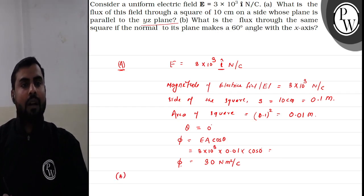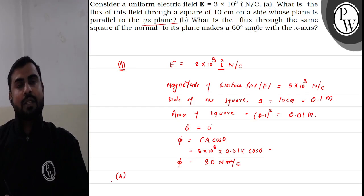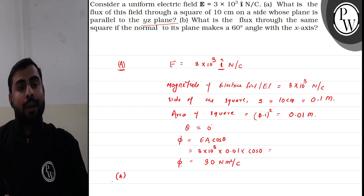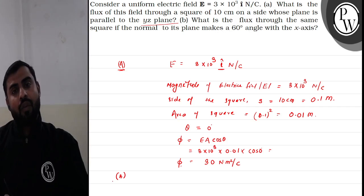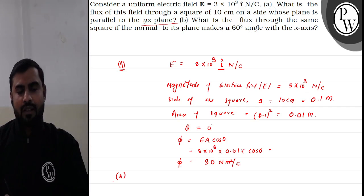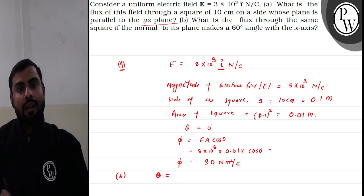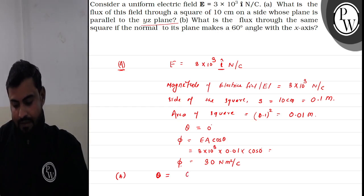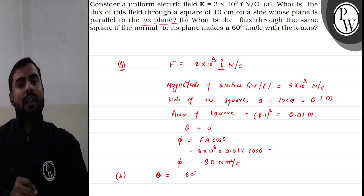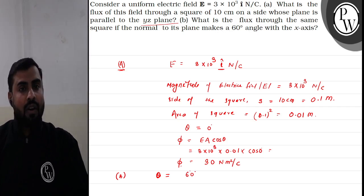In the second part, it is mentioned that what is the flux through the same square if the normal to its plane makes a 60 degree angle with the x-axis. A very small change is given in this second part. The theta, meaning the angle between E and A, is now given as 60 degrees instead of 0 degrees.